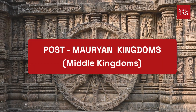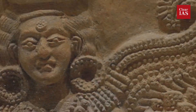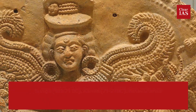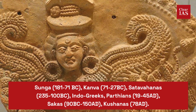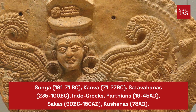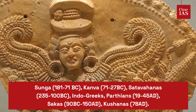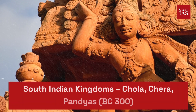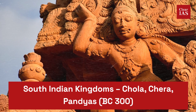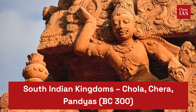Moving on to the Post-Mauryan kingdoms: Sunga, Kanva, Satavahanas, Indo-Greeks, Parthians, Sakas, and Kushanas are the post-Mauryan kingdoms. The famous South Indian kingdoms — Chola, Chera, and Pandyas — belong to around 300 BC.